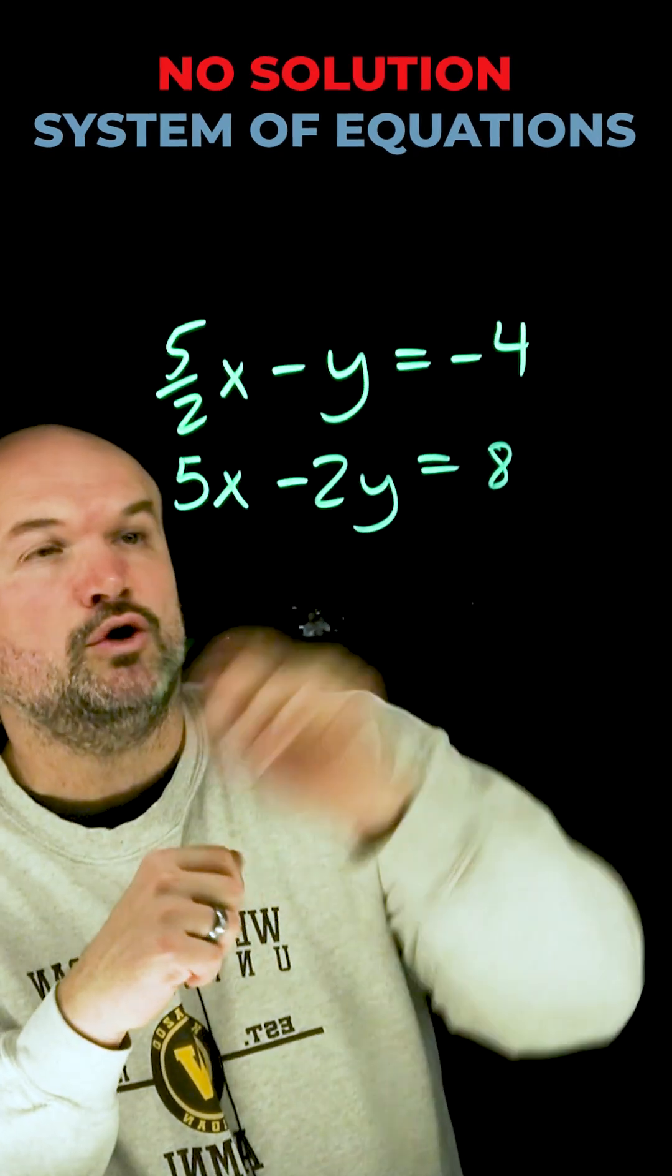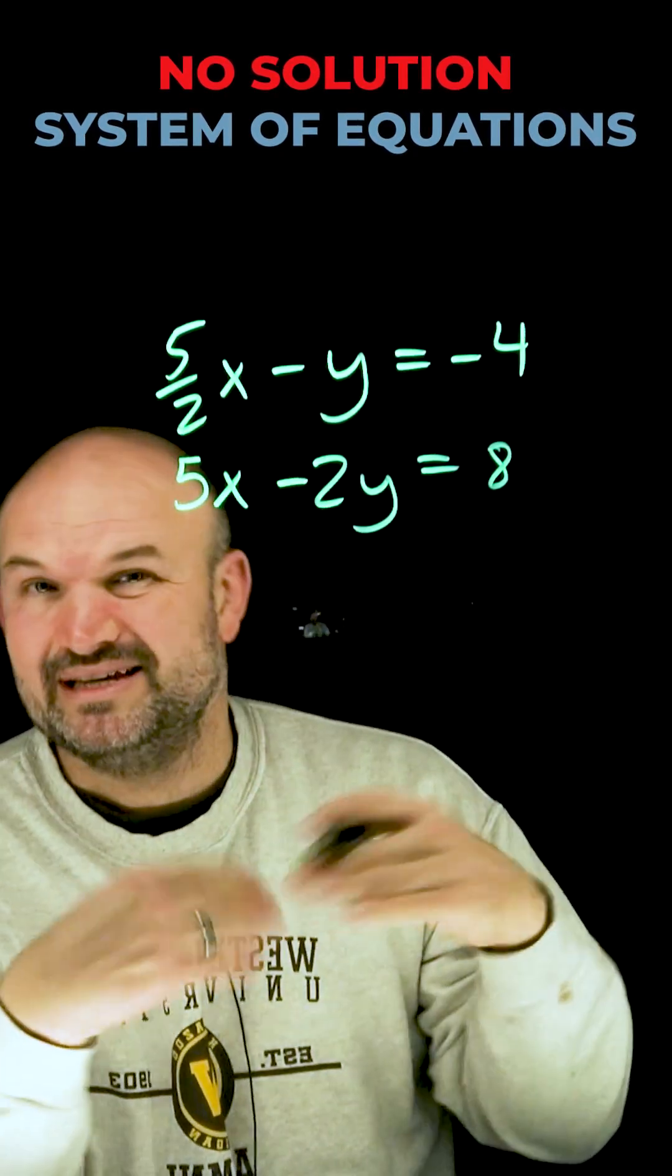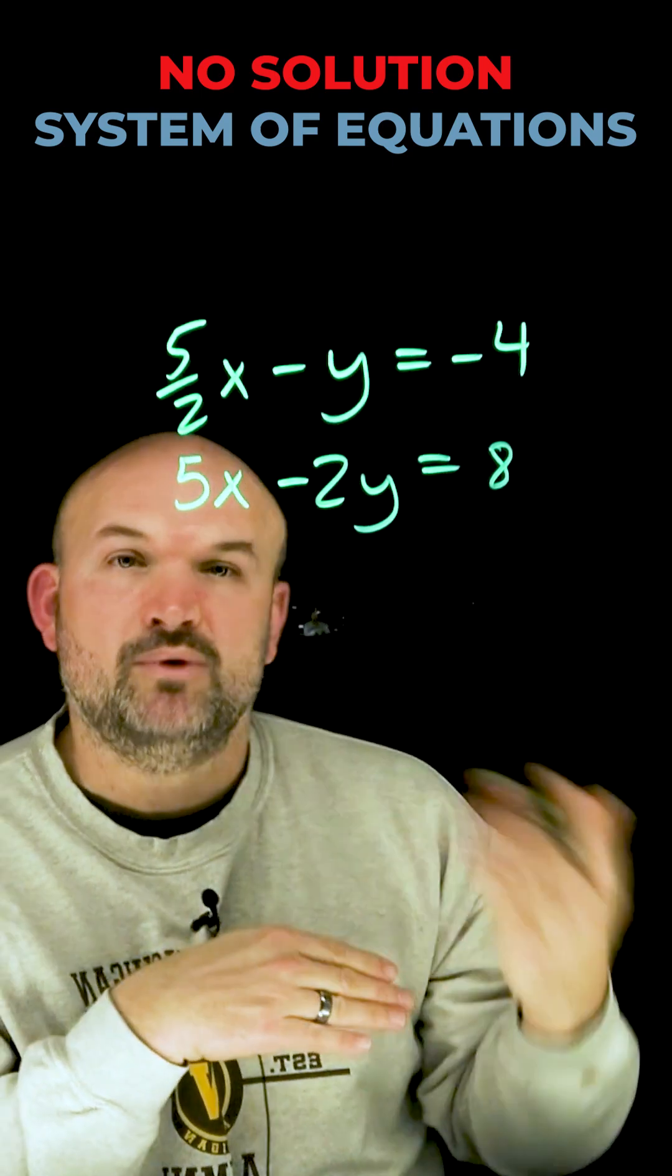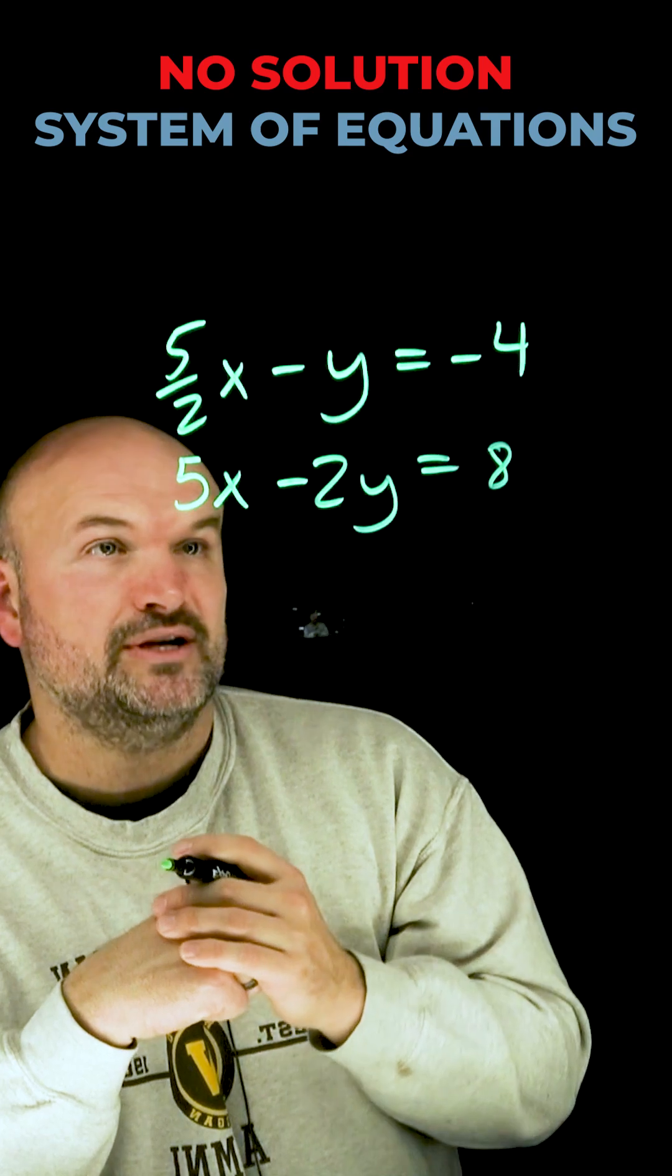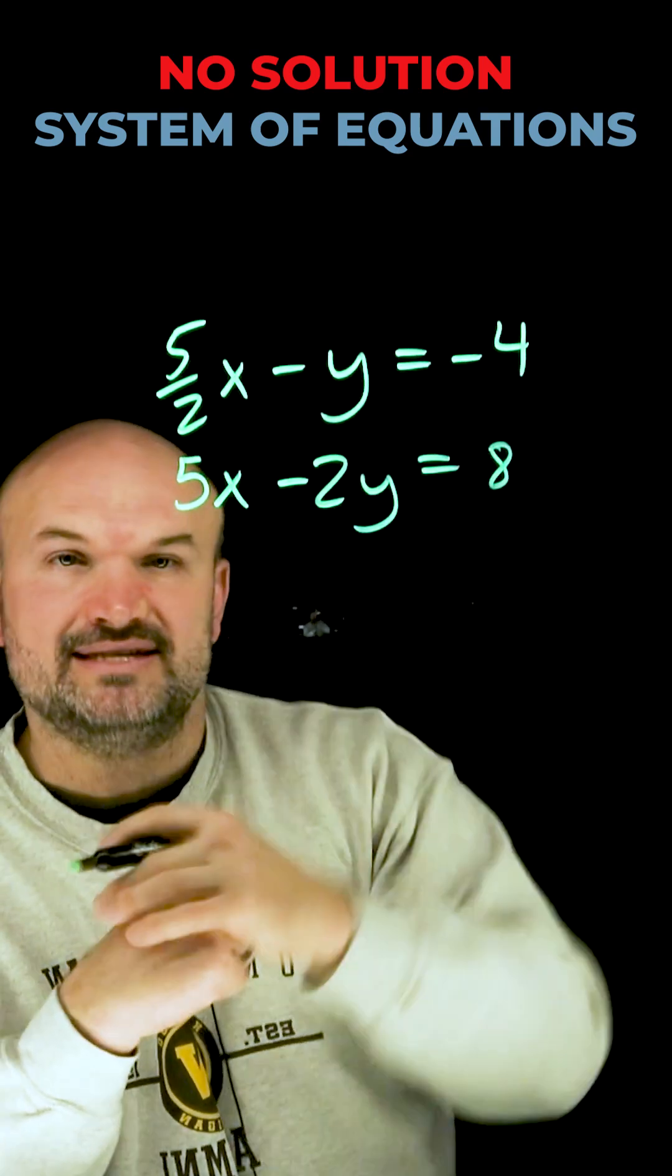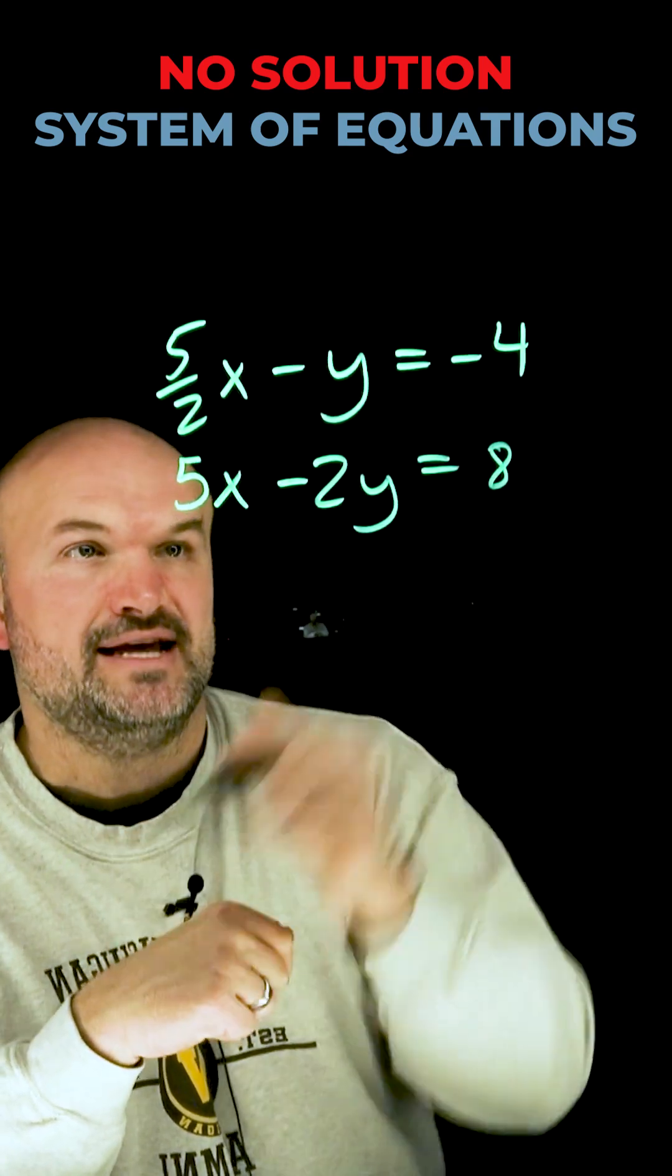The first thing we want to do is be able to get our coefficients of either x or y to be exactly the same, and I always like them to be one positive and one negative, so therefore I can add the two equations. So what I'm going to do is simply just choose y to say I want those coefficients to be exactly the same.